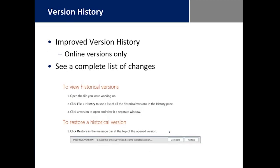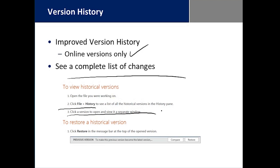We have a greatly improved version history for the online versions. While version history exists in any installed version of Microsoft Office so you can roll back, it hasn't always been clear what you're rolling back to. In this online version history, you get a complete list of changes under File History. You select the version you want, it opens in a separate window, and you can see a side-by-side comparison of differences or choose to restore.